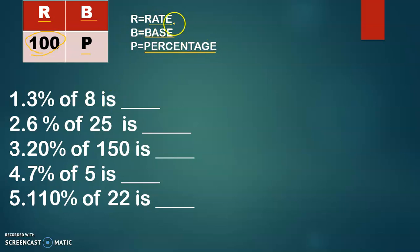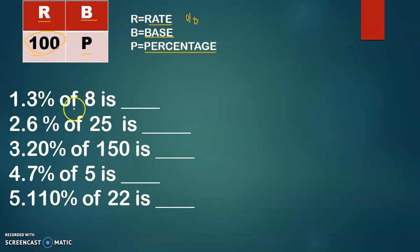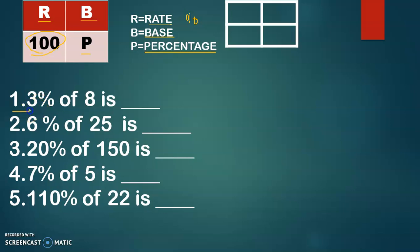The rate is the number that always has the percent sign or the word percent in it. The base is usually after the word 'of', and the percentage is usually after the word 'is'. Now let's try to solve. Let's solve problem number one.